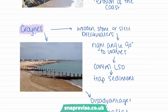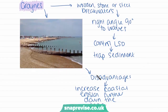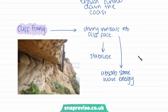Groins are typically wooden, stone, or steel breakwaters that jut out from the coast at roughly a 90-degree angle. They are used to control longshore drift — where waves hitting the shoreline at an angle move sediment along the coast as they pull back. Groins trap sediment and stop it moving further down the coast. However, a disadvantage is that they tend to increase coastal erosion further down the coast.